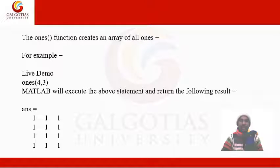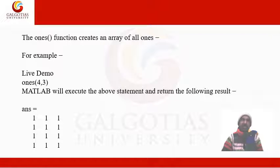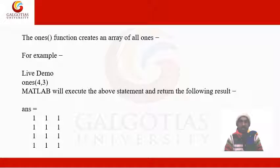The ones() function creates an array of all ones. For example, ones(4,3) creates a matrix with four rows and three columns where every element has a value of one. MATLAB will execute this and display the result accordingly.